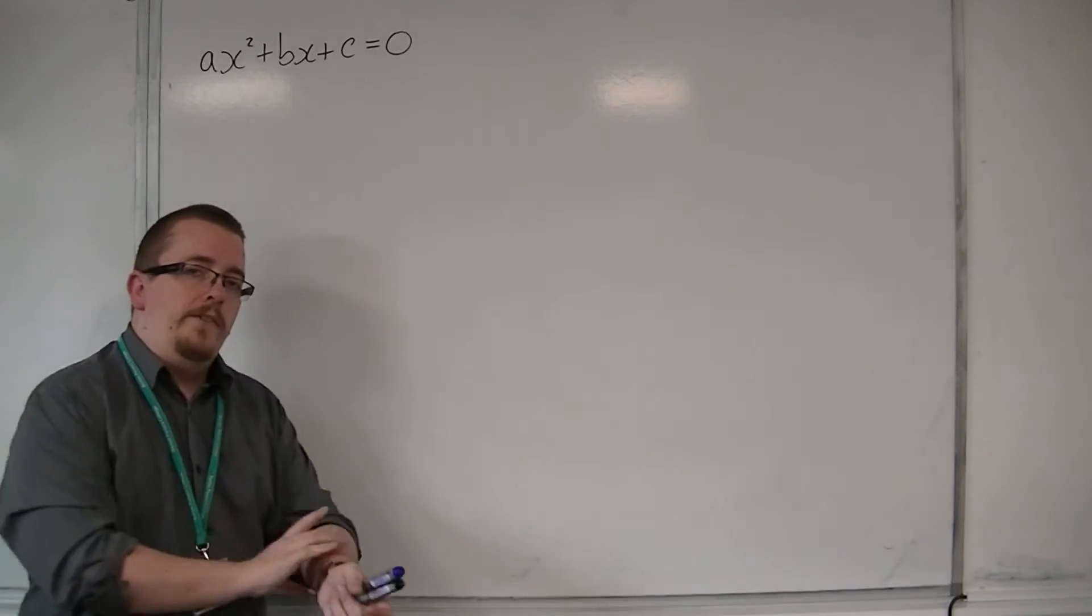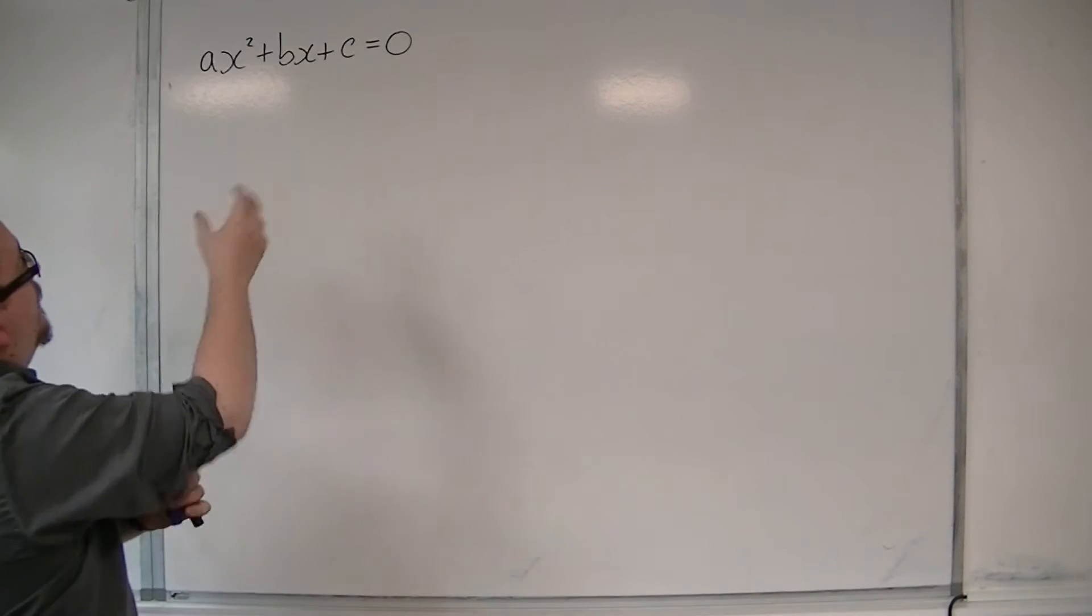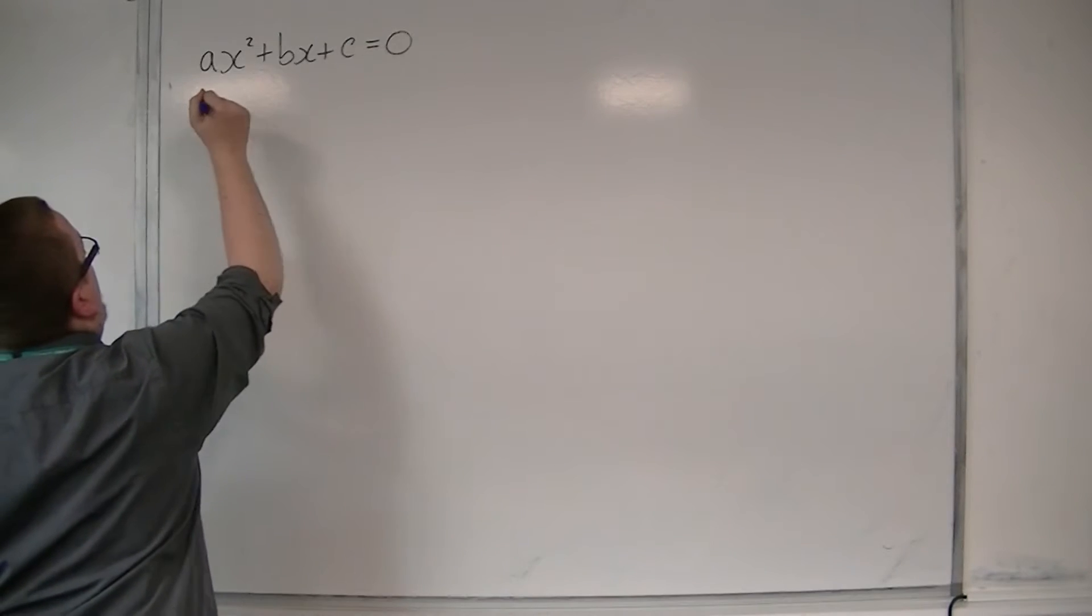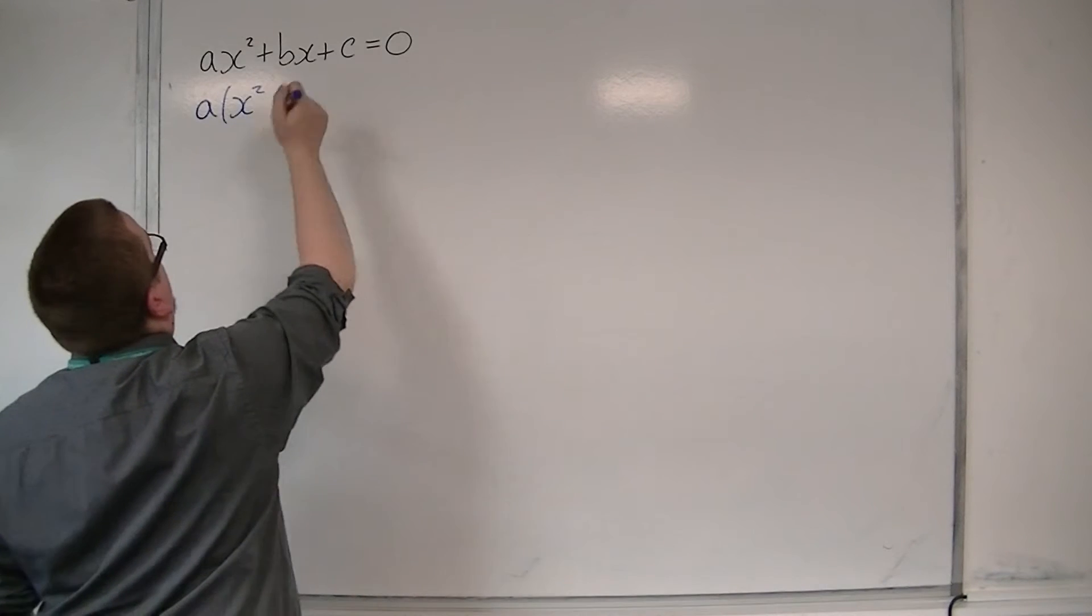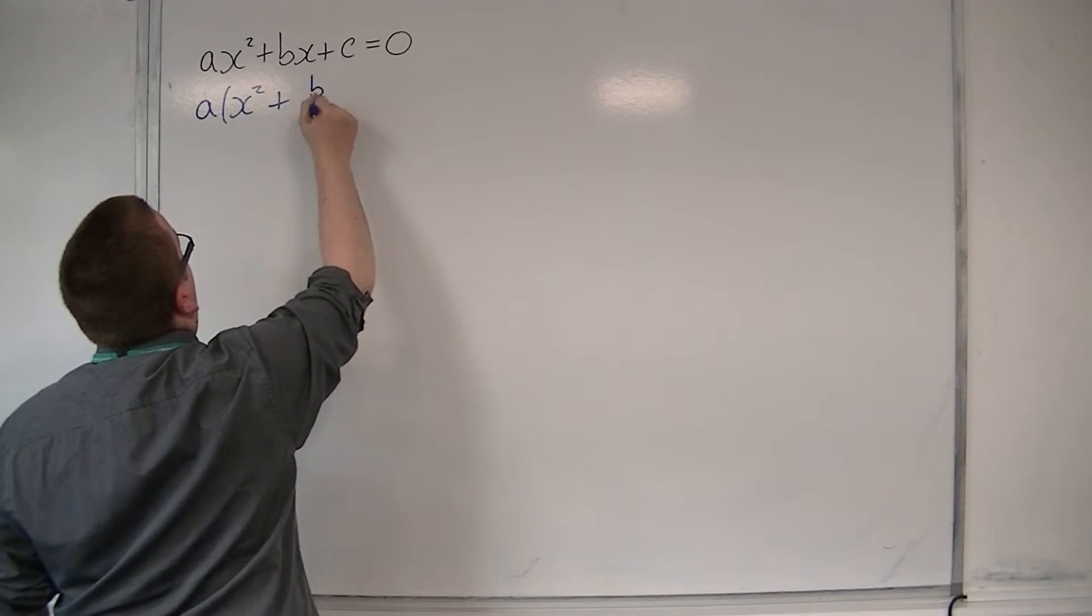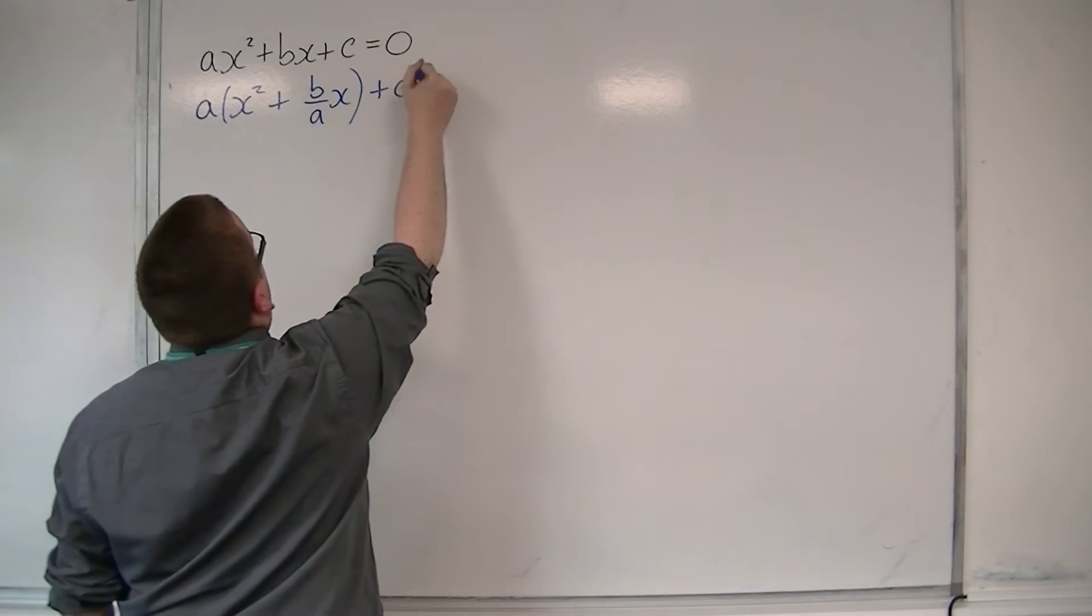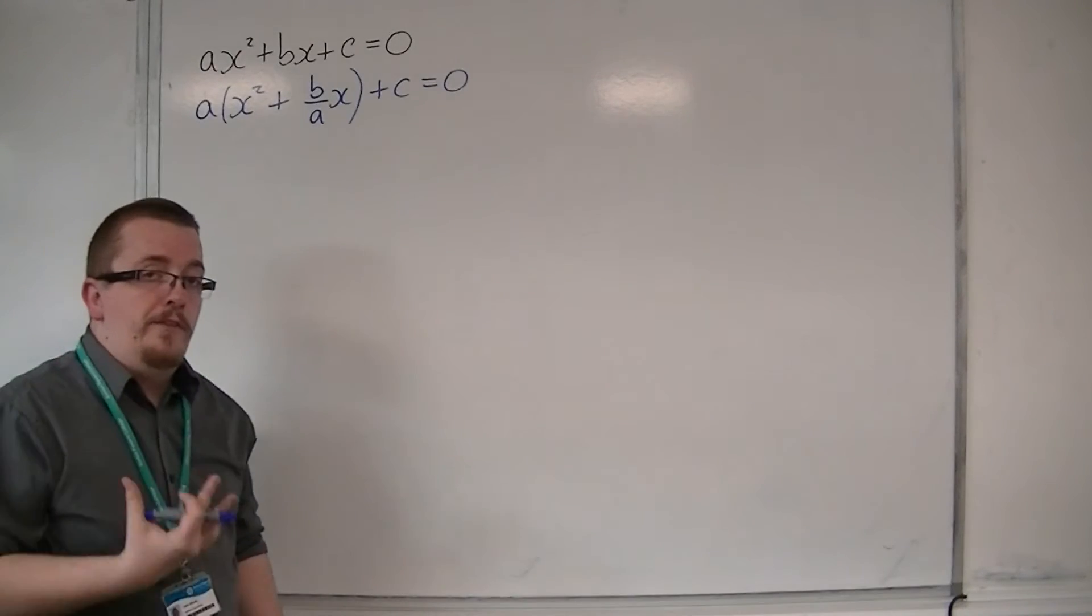It starts with the process of completing the square for this. When we completed the square, we would take a out the front of the first two terms. So we've had x squared plus b over ax, and then we'd have that plus c on the end. I factored out a from the first two terms.